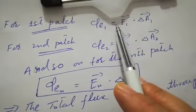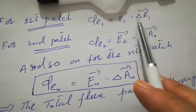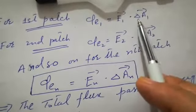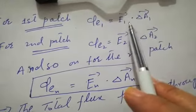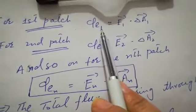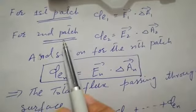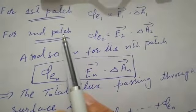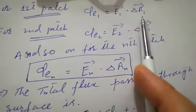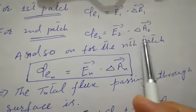For the first patch, we have a value of flux, because flux Φ = E·A. Here we will write delta for small patches. We have the formula of flux for one flat surface: Φ_E1 = E1·ΔA1. For the other patch, Φ_E2 = E2·ΔA2. We have divided the surface into n number of patches.